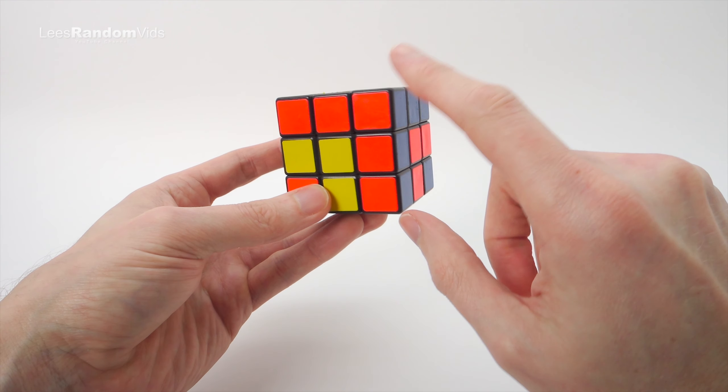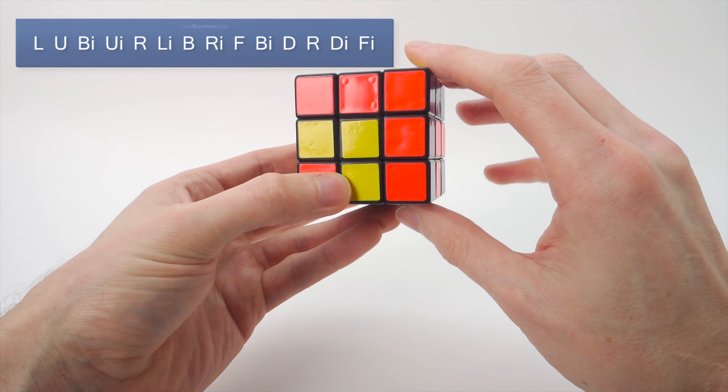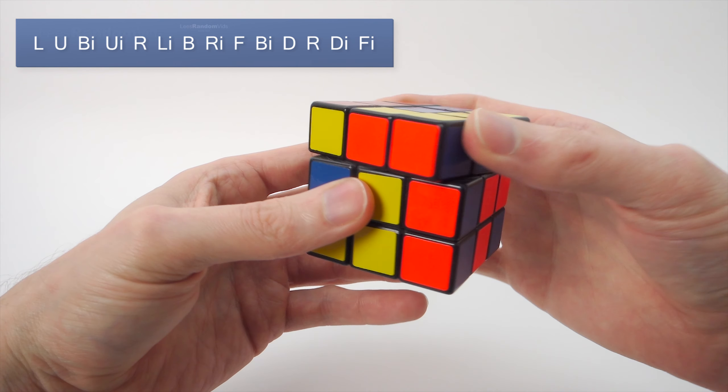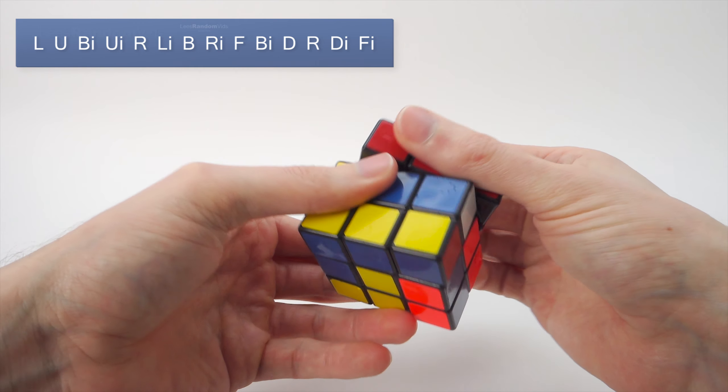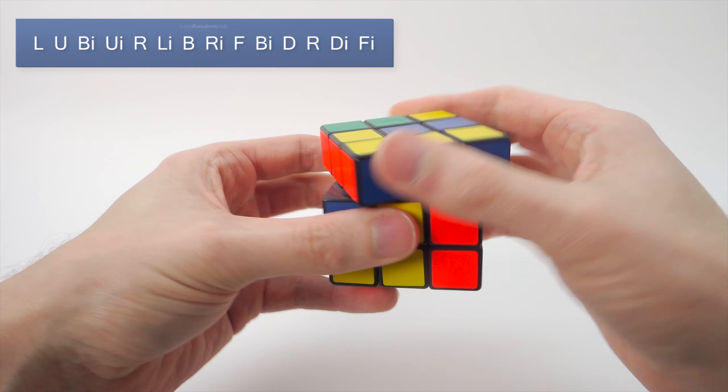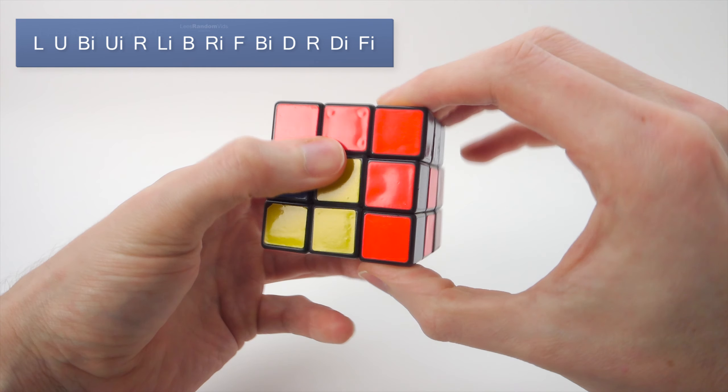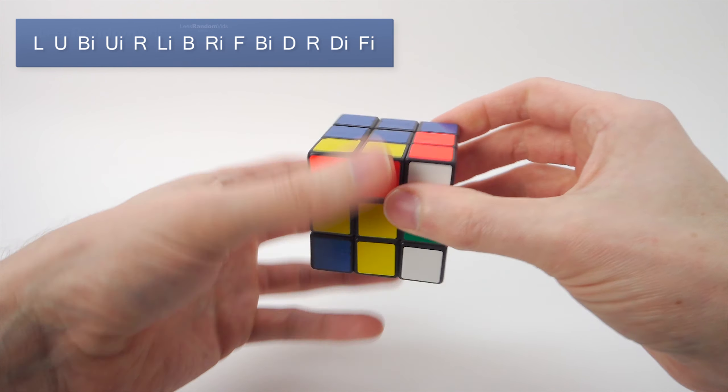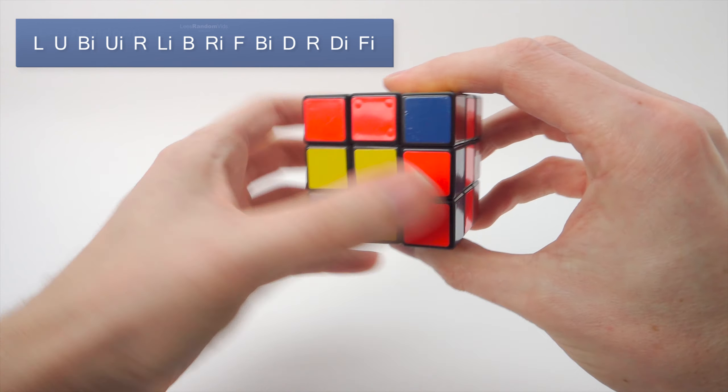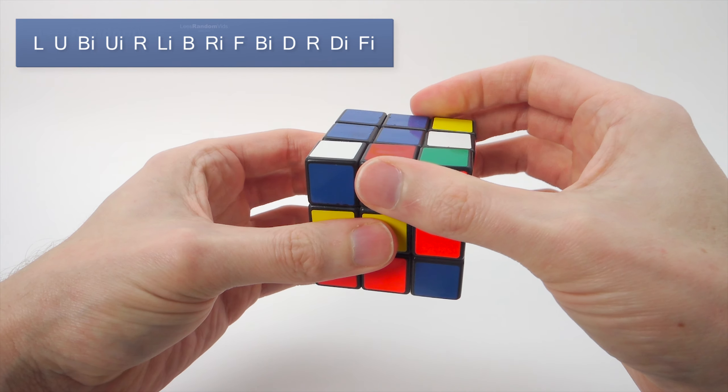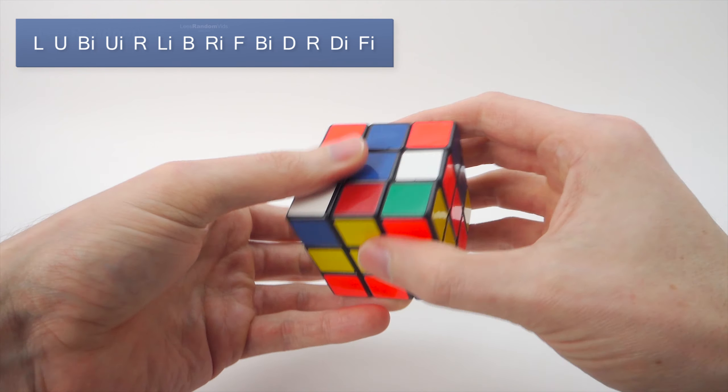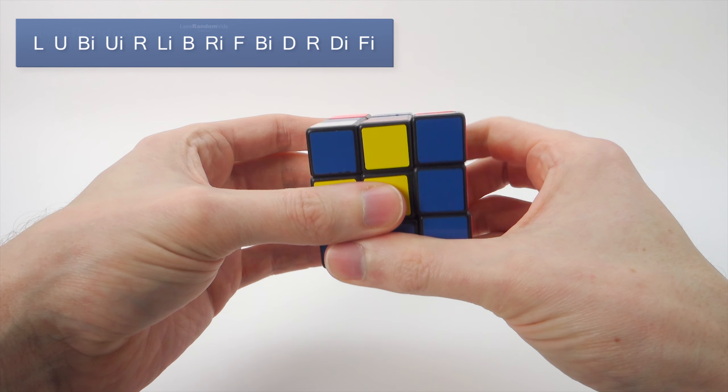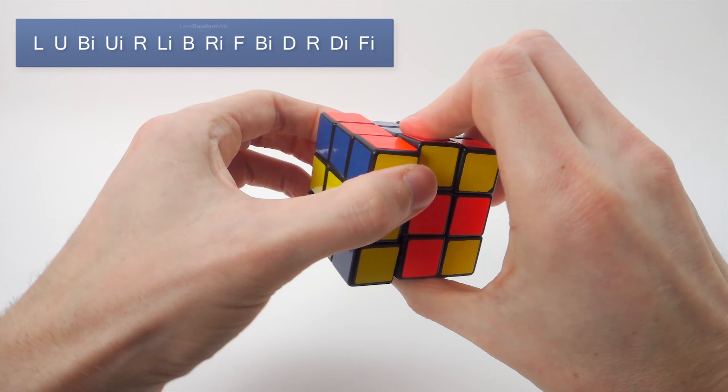So where these meet, this is the top right. Let's do the same algorithm again. L, U, B', U', R, L', B, R', F, B', D, R, D', F'.